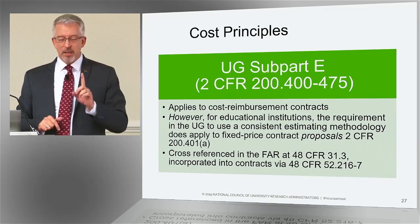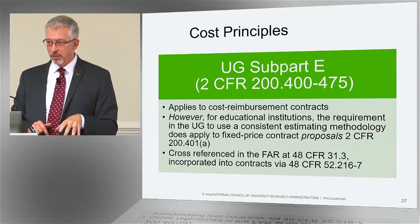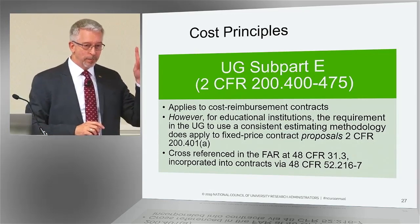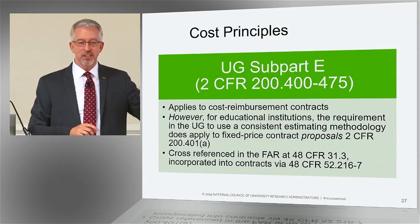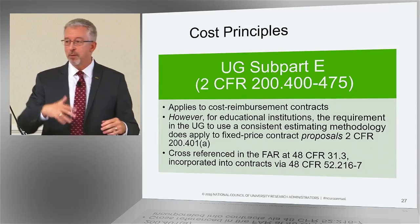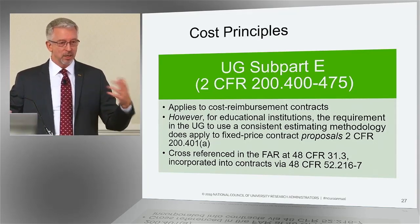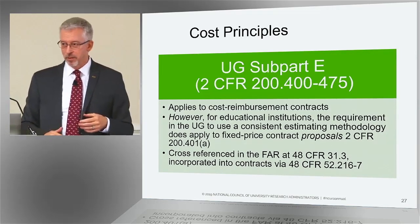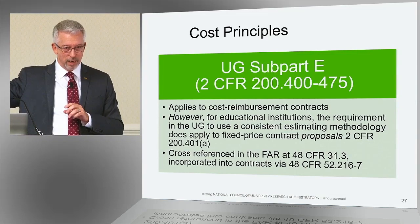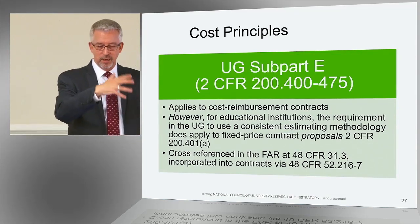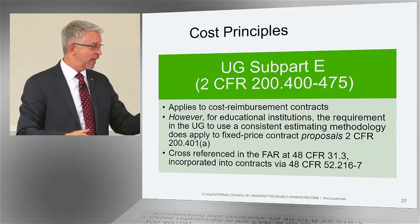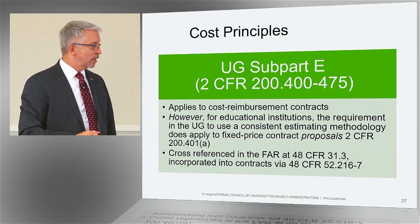But even though there's no audit clause in a fixed price contract — no FAR clause for audit — the government can't come in and audit the costs you've incurred. They can, however, audit your cost proposal to make sure you followed the same methodology in putting that price proposal together as you would normally use in your cost-based proposals. So even though you won't be validated against your costs on a fixed price contract, you still have to follow a legitimate university set of processes for putting that price proposal together, and that is explicitly stated in the Uniform Guidance.